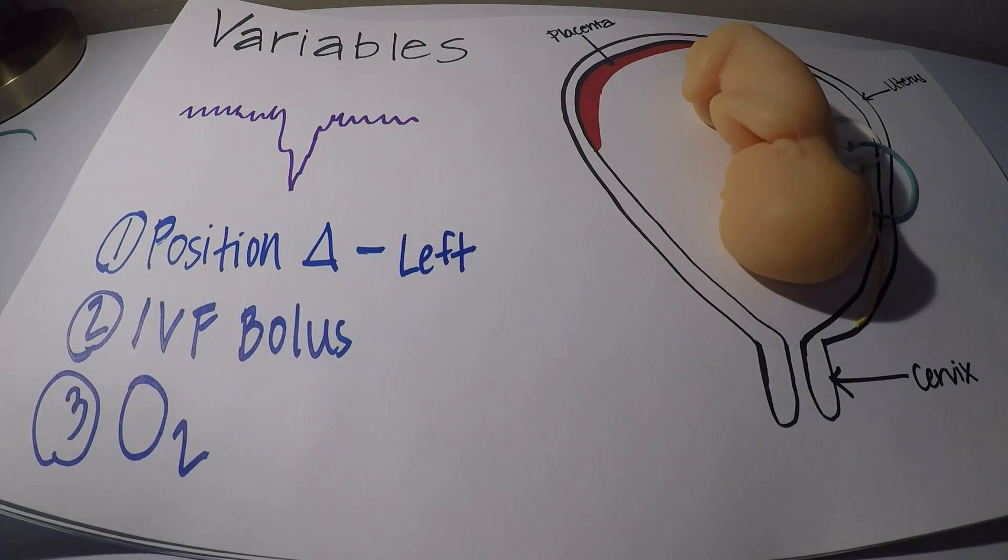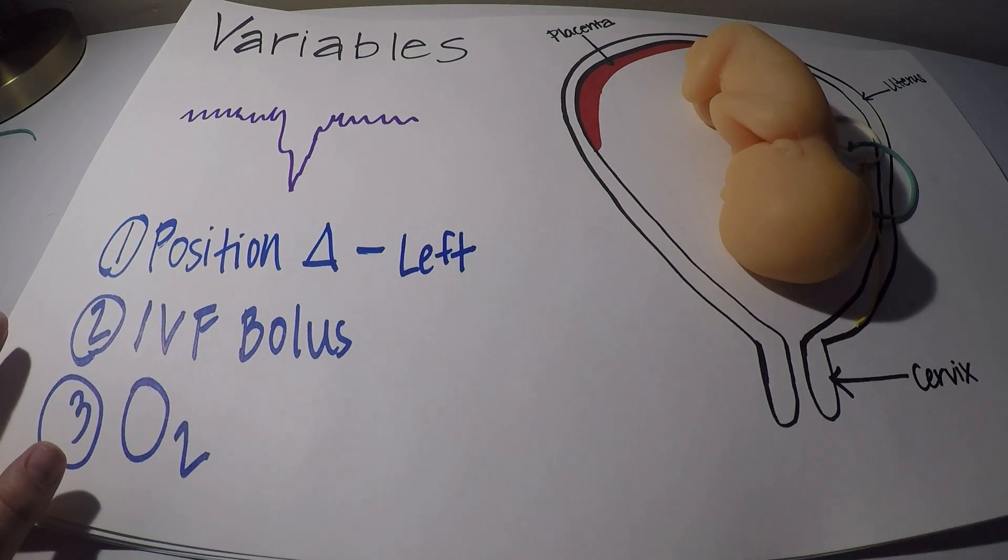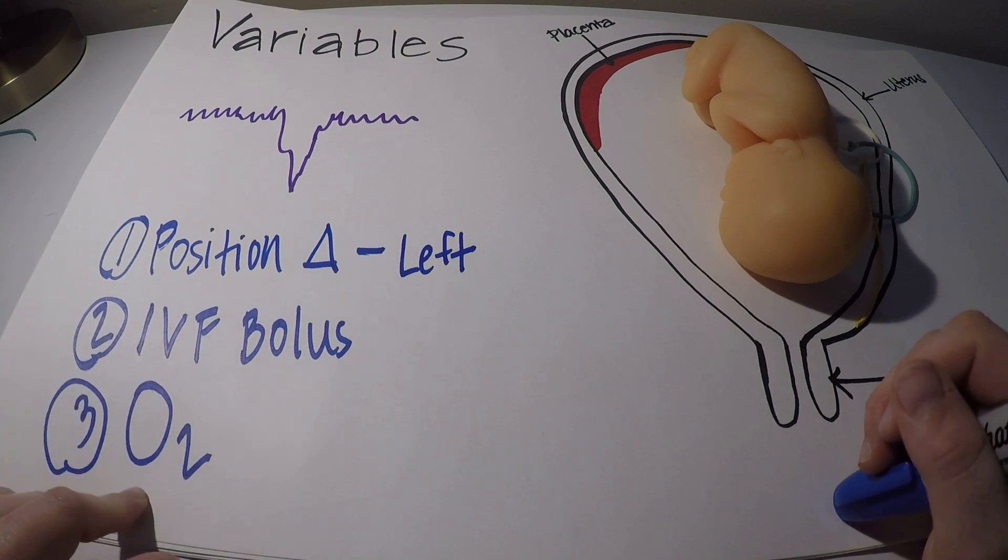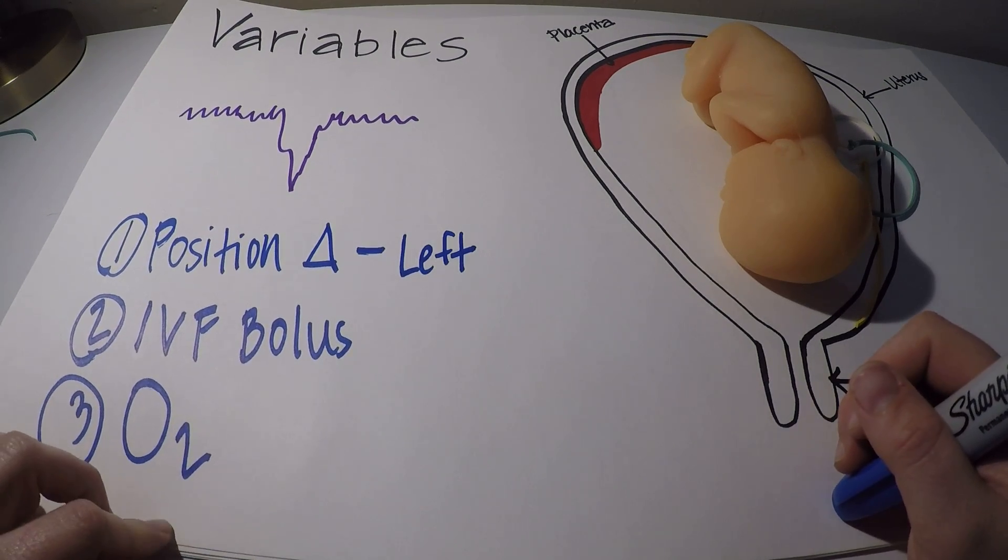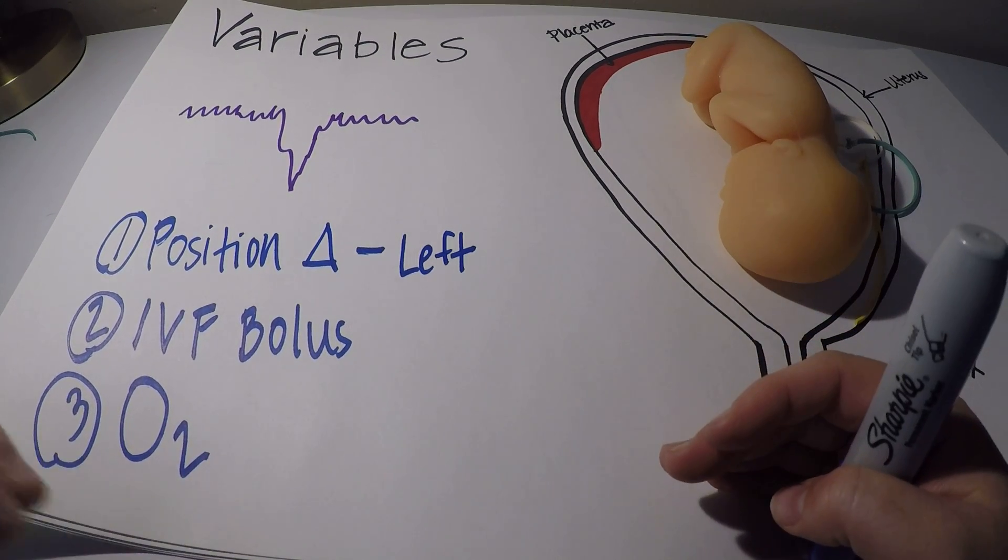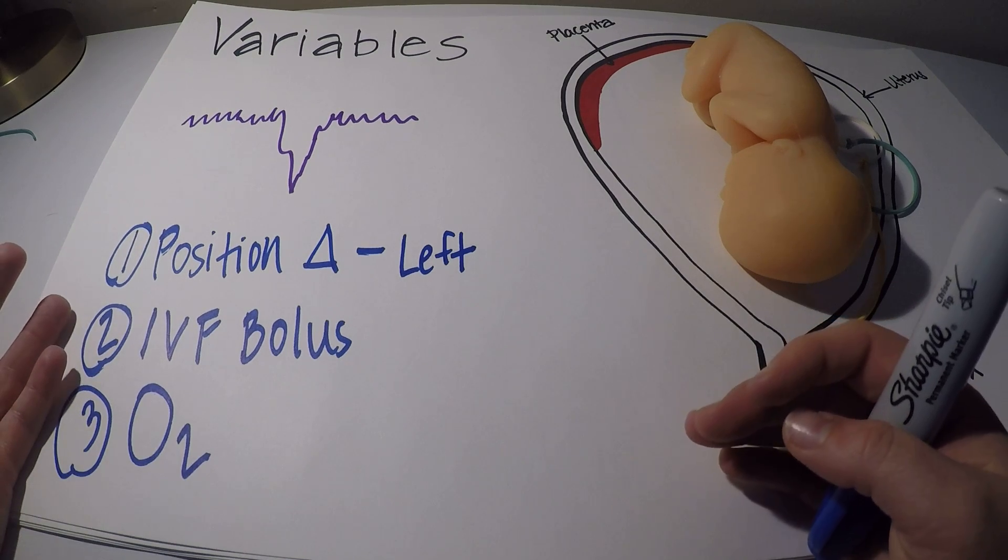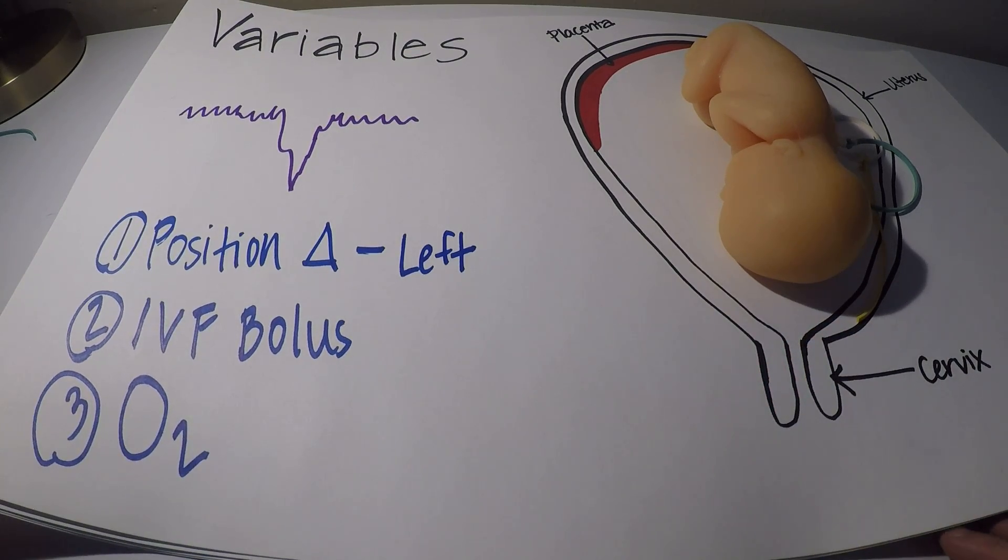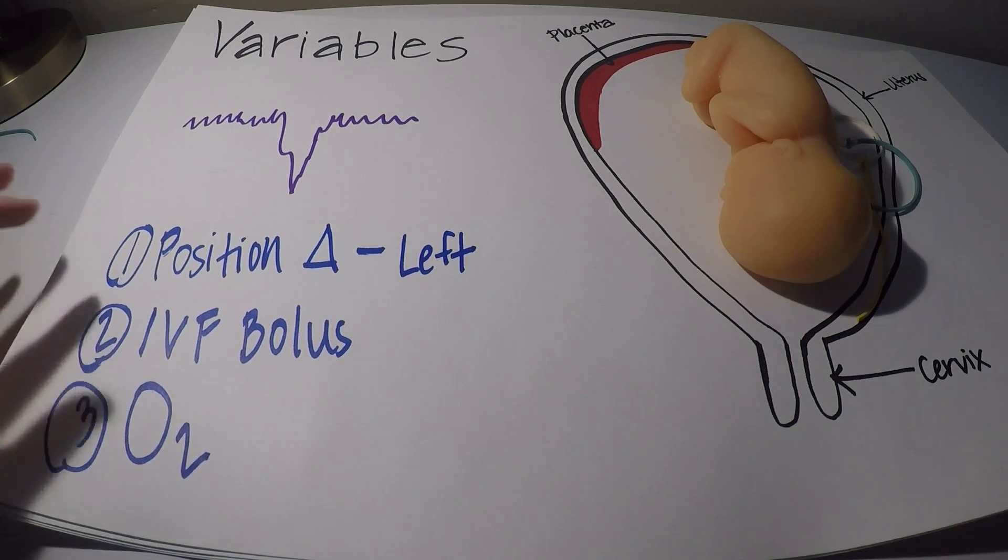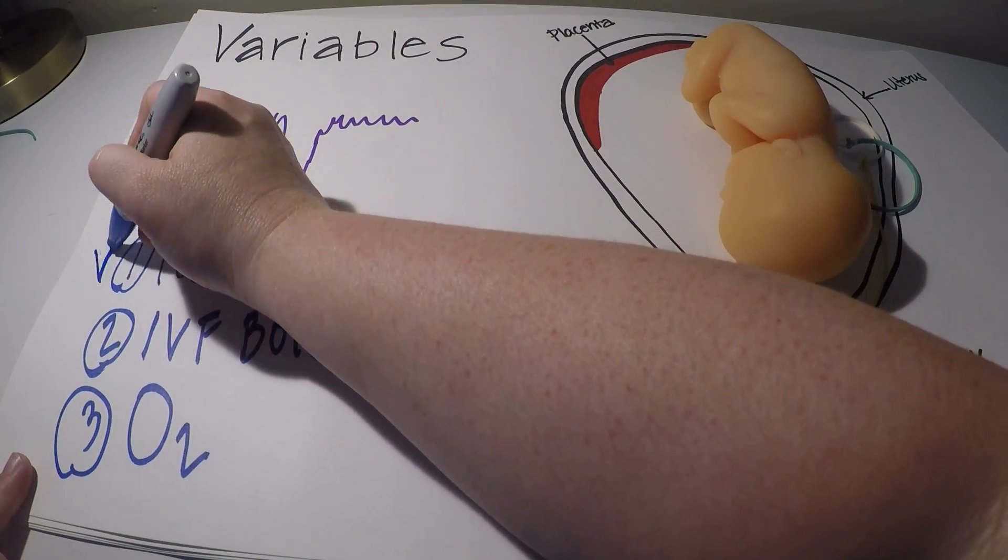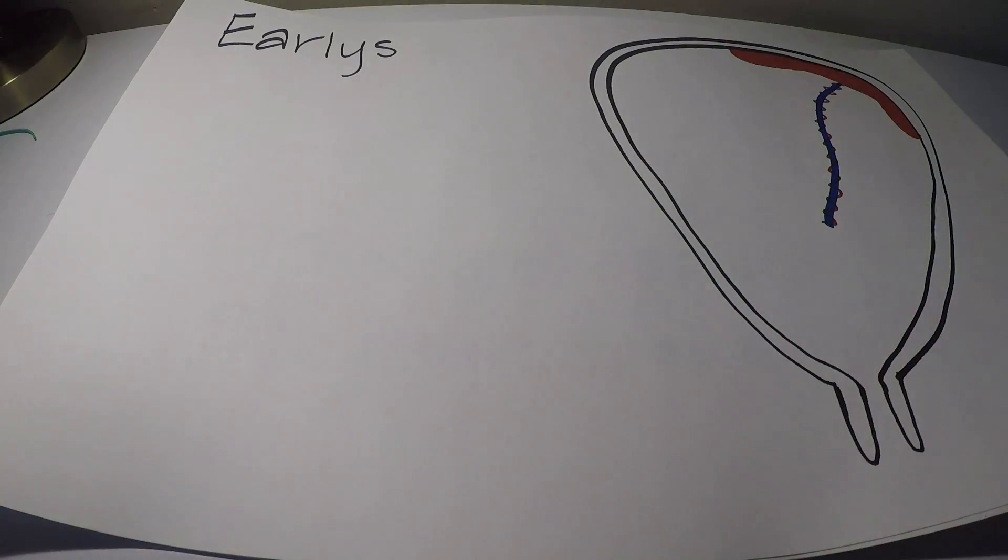When we give moms oxygen in labor, we are giving them 10 to 12 liters on a non-rebreather. We do not mess around with nasal cannula at this point. So oxygen via non-rebreather can also be another option, especially if they're happening with every contraction because baby has a nuchal cord. The biggest thing to remember though is position.